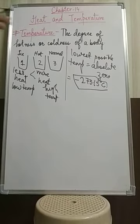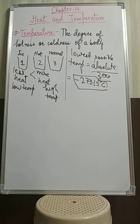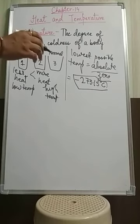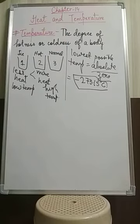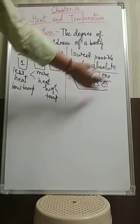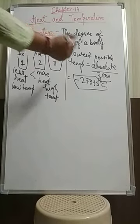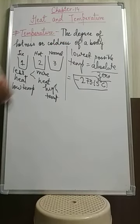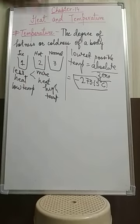The numerical value of absolute zero is minus 273.15 degrees Celsius. This is the lowest possible temperature, known as absolute zero. An object at absolute zero would contain no heat energy at all. However, that type of substance is ideal — it is not found in practice.